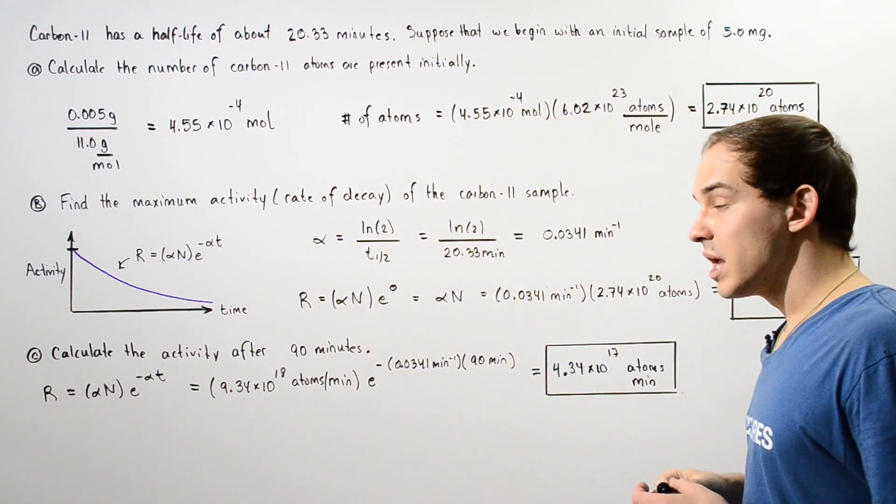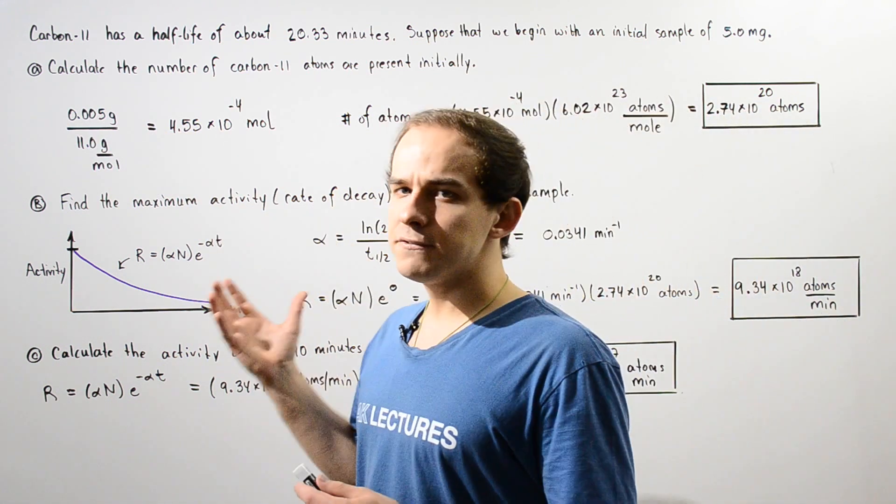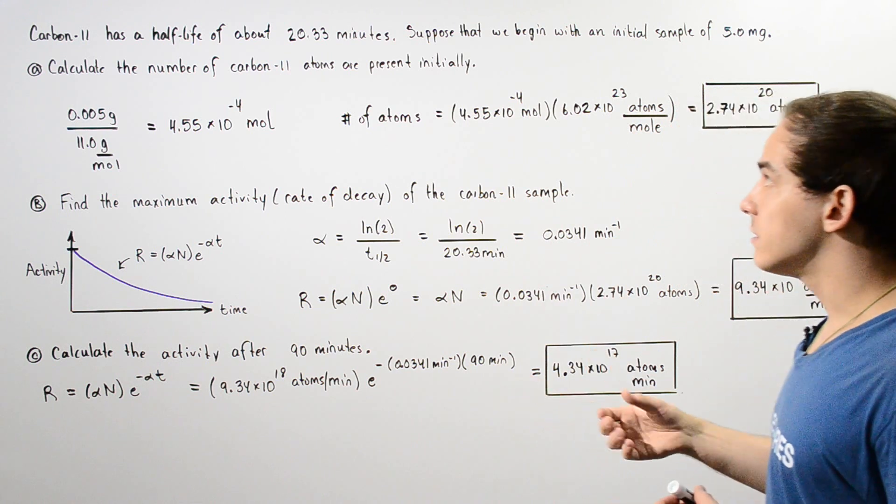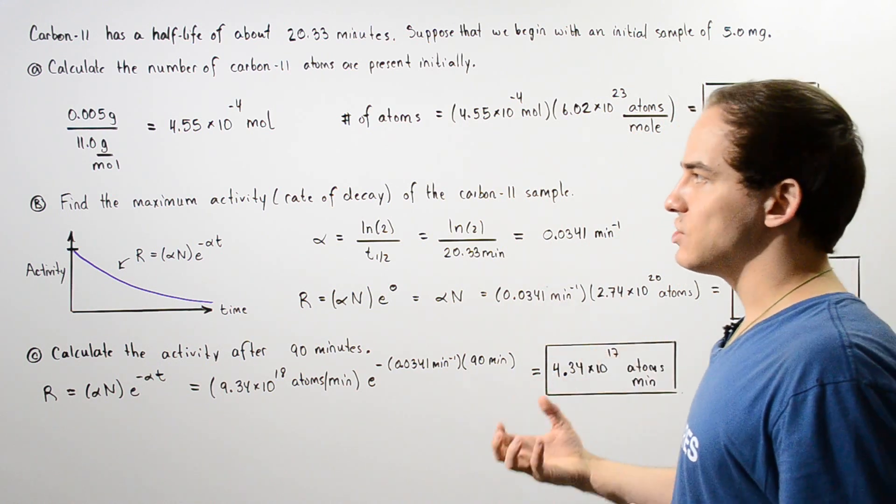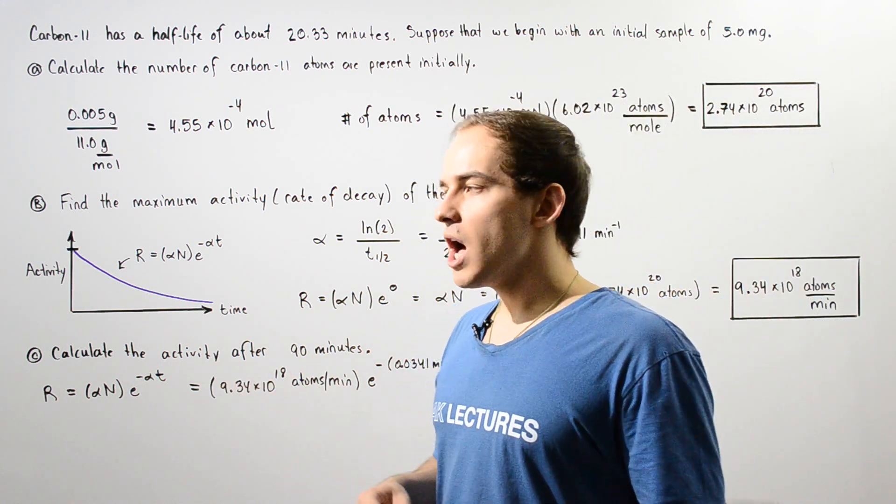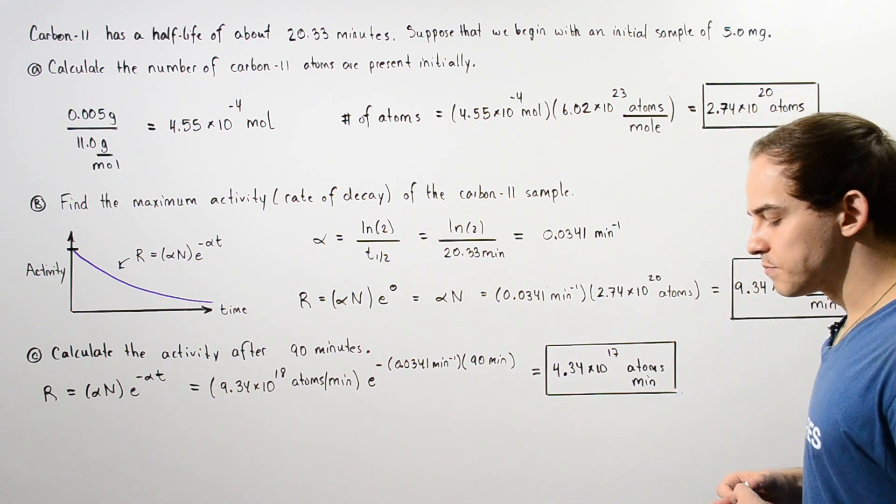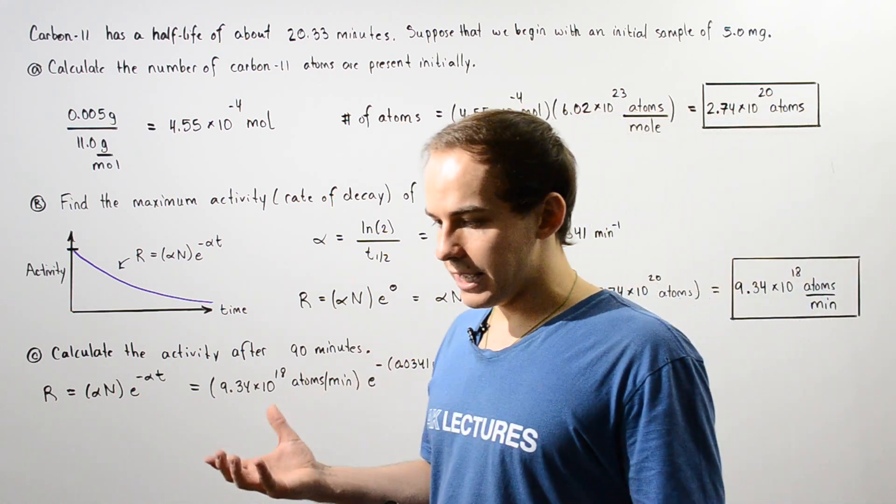Let's begin with part A. Calculate the number of carbon-11 atoms that are present initially, at a time of zero minutes. To calculate this number,